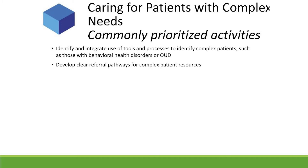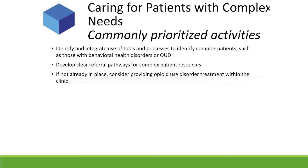Clinics often develop clear referral pathways for complex patients and ways to close the loop on those referrals. Many clinics have said they really need to consider how they're going to provide opioid use disorder treatment within their clinic. Because many patients — we hear story after story of patients who say, if you can't provide it, it must not be very important, and I don't need it. So I don't need to go somewhere else. They want to receive their care in their medical home, which is their primary care clinic setting.